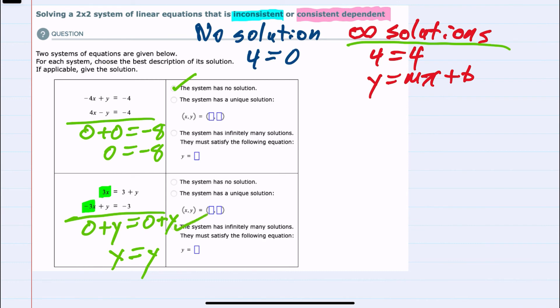It's this third choice, but we have an additional piece here where we're asked to give the equation of that solution. So we know there's infinitely many. To find the equation, I can take either of the two equations I was given and solve for y. Since it doesn't matter which one, I'm going to take the second equation.